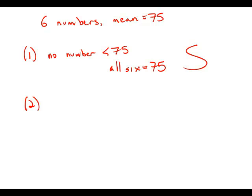Now ignore statement number one, move on to statement number two. Statement number two, almost identical information. Now it's telling us that no number on the list is greater than 75.